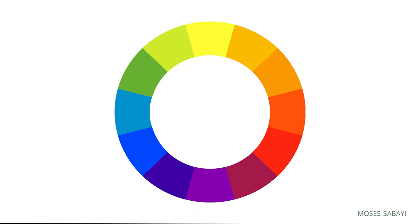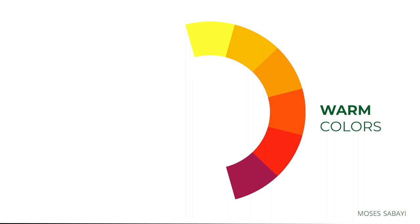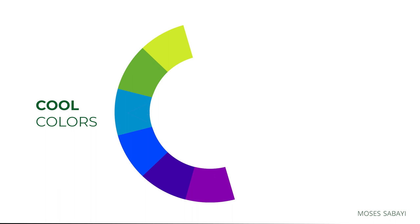We have the triad, which are three colors equally spaced around the color wheel. Also on the color wheel there are color temperatures — warm colors and cool colors. Warm colors include red-violet, red, red-orange, orange, yellow-orange, and yellow. Cool colors include violet, blue-violet, blue, blue-green, and green.